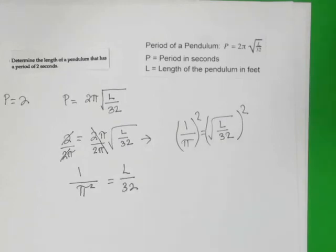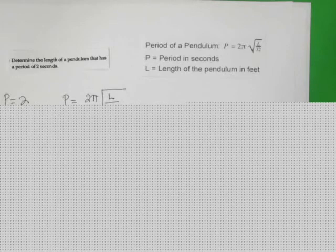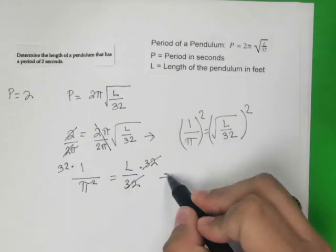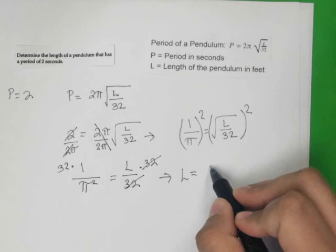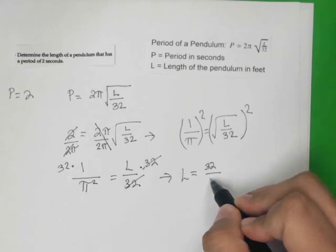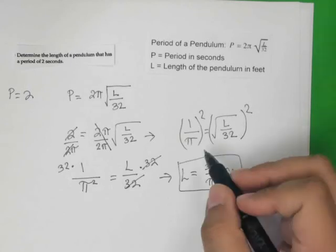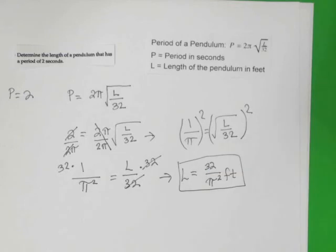Now, to isolate L, we simply multiply both sides by 32. That tells us the length of our pendulum. The length of the pendulum is 32 over pi squared feet. This is how long the pendulum is that has a period of two seconds.